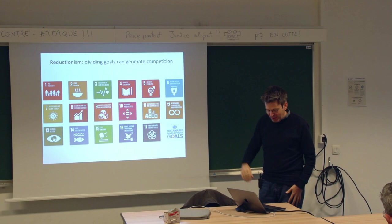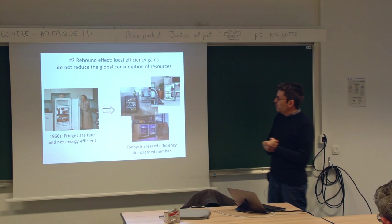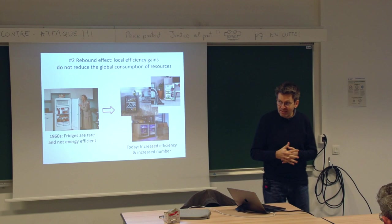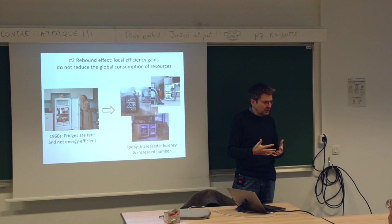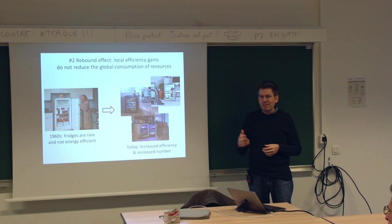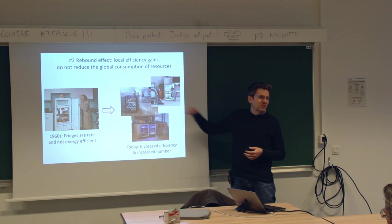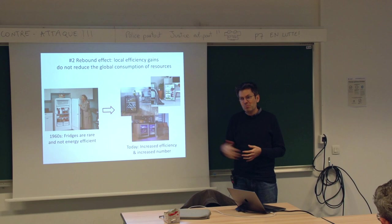The second point is on the rebound effect. Here I take my favorite example about fridges. Fridges in the 1960s were consuming a lot of energy, a lot of electricity, but they were not that numerous. What we've done is improved the energy efficiency of fridges. And what happened? They became more attractive, cheaper. So we multiplied the number of fridges, made them bigger. Now we have connected fridges, wine cellars. The population of fridges has increased a lot, and the consumption of energy because of fridges has increased. So energy efficiency, in a reductionistic view of the world — like performance — is counterproductive. You always consume more energy at the end.